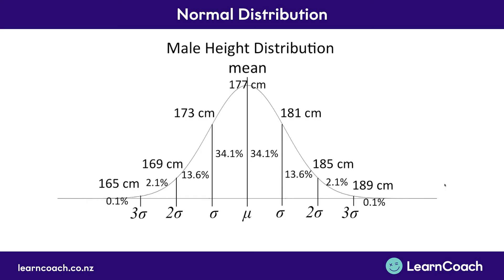Now none of this you have to remember, but I just want you to understand that the mean is in the middle, and standard deviation is how spread out it is. If there was a huge spread in male heights, the standard deviation wouldn't be 4 centimeters — it might be 40 centimeters. But because the standard deviation is quite small at only 4 centimeters, this is quite a high-peaking bell curve. So that's the idea of standard deviation — how spread out this bell curve is — and mean, which is bang in the middle.